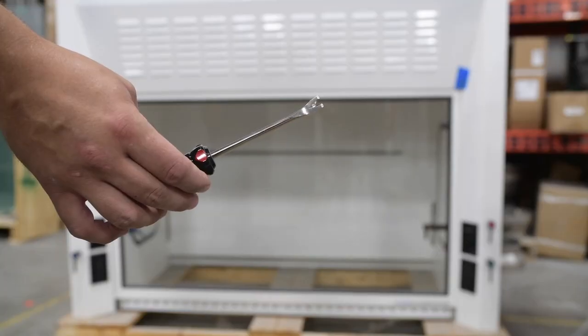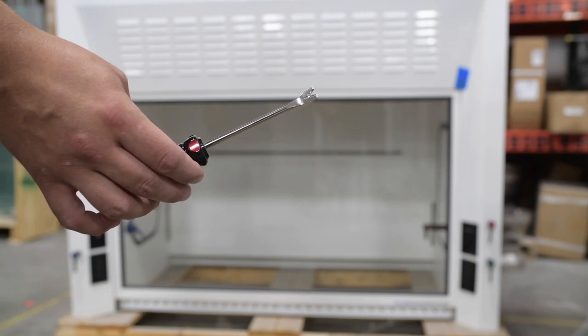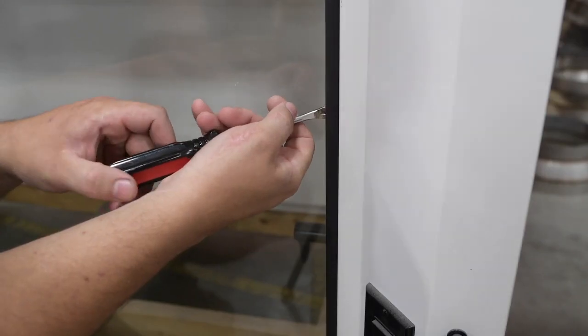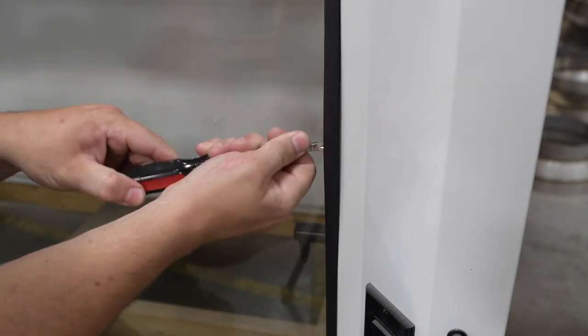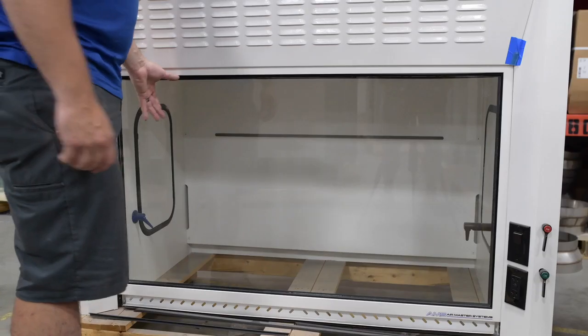Next, use a thin pry tool to get underneath the sash trim. Take your thin pry tool and start to work it between the sash glass and the sash trim with an outward pulling motion. You will see the trim will start to pop out. Go ahead and remove it on all the edges.